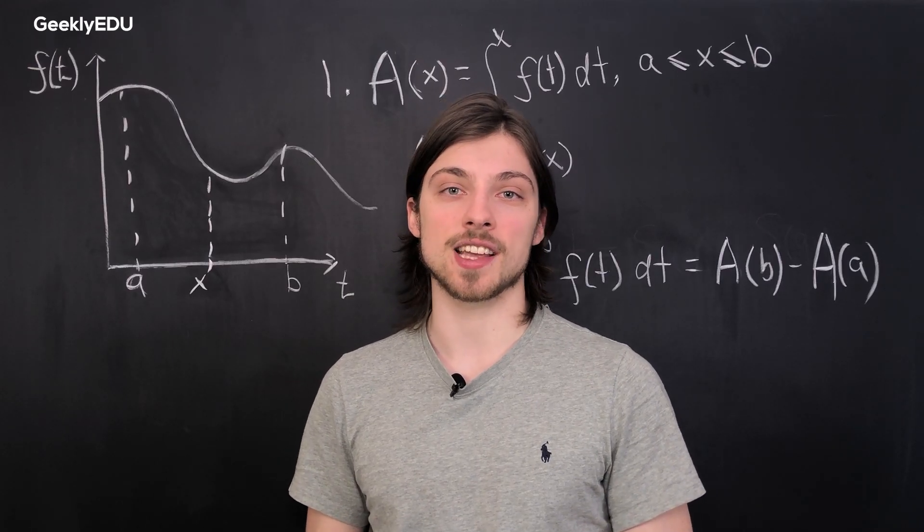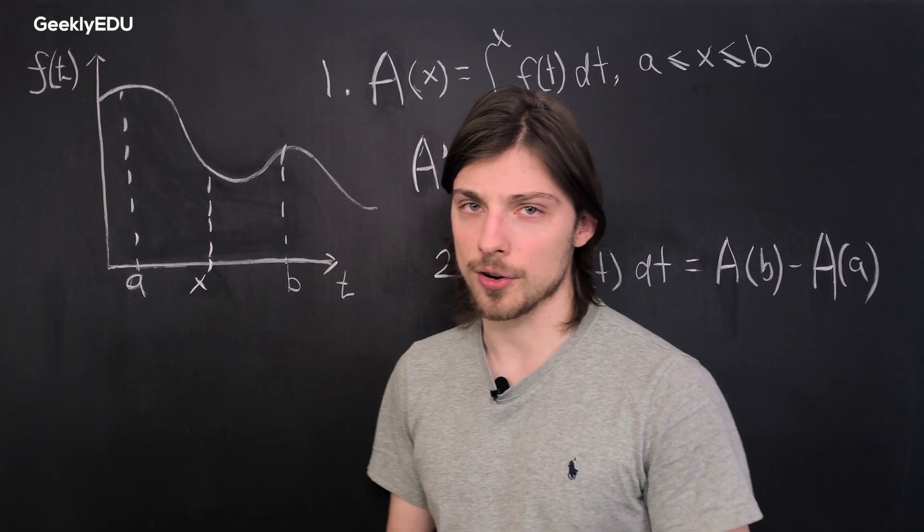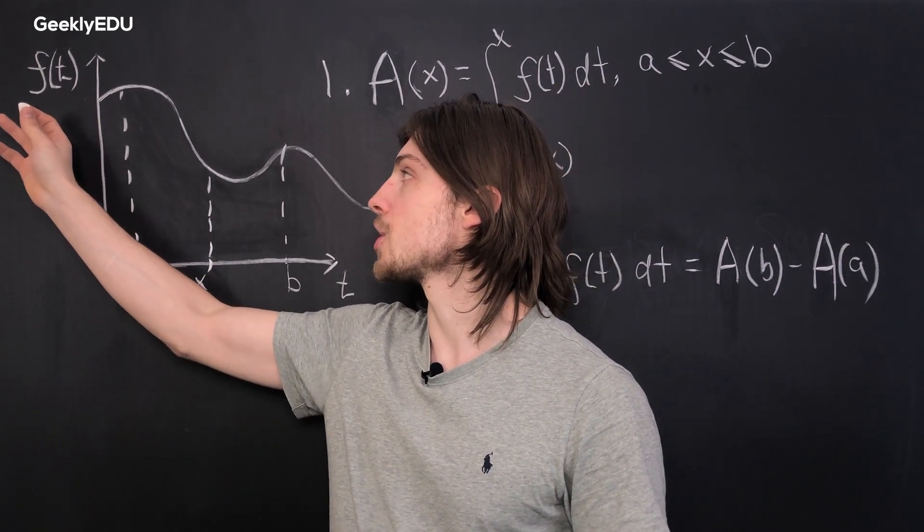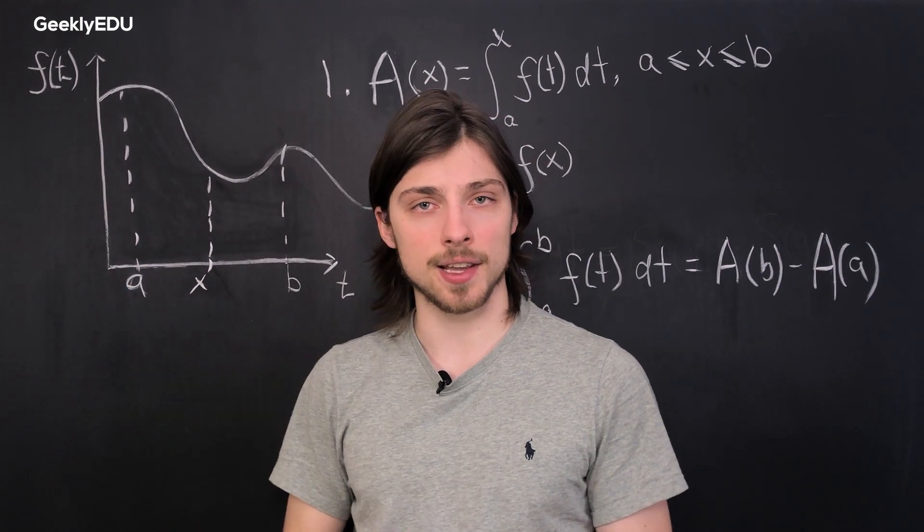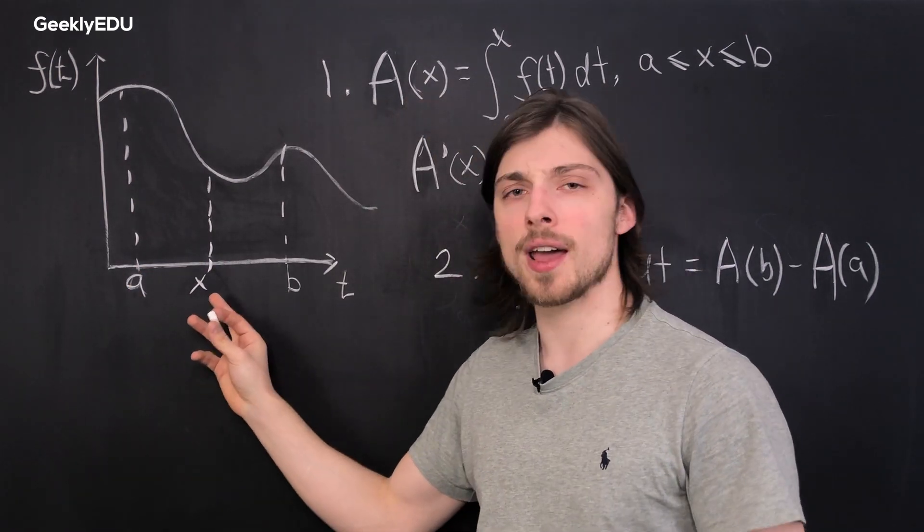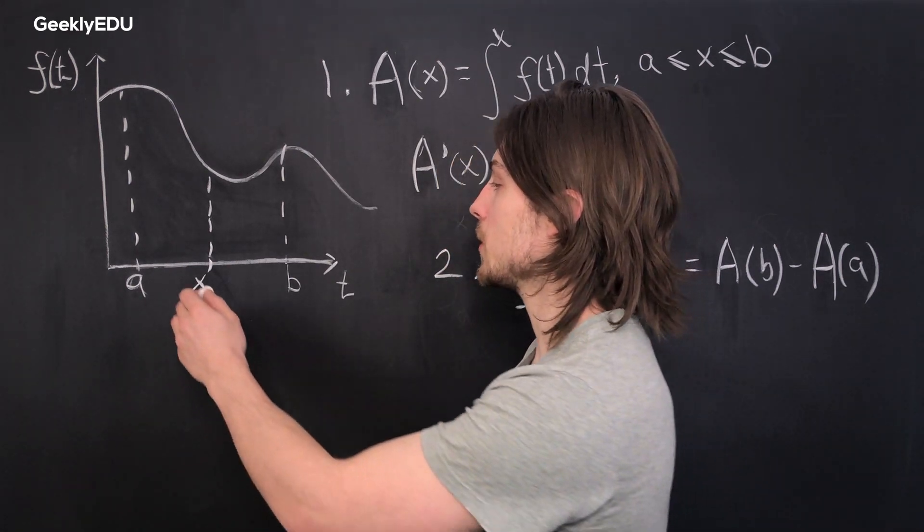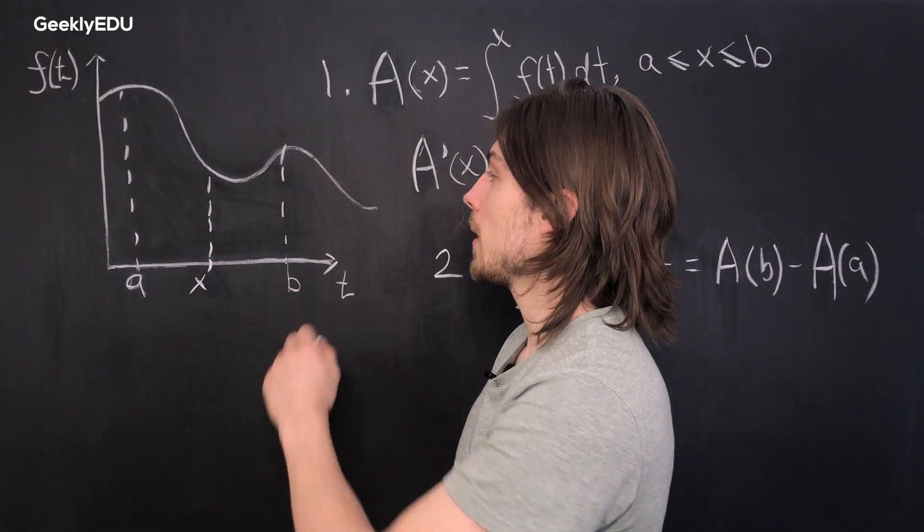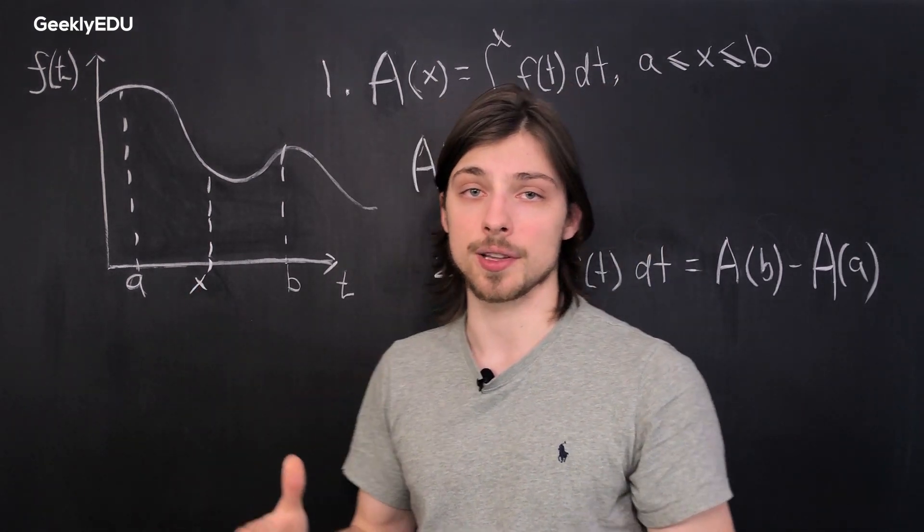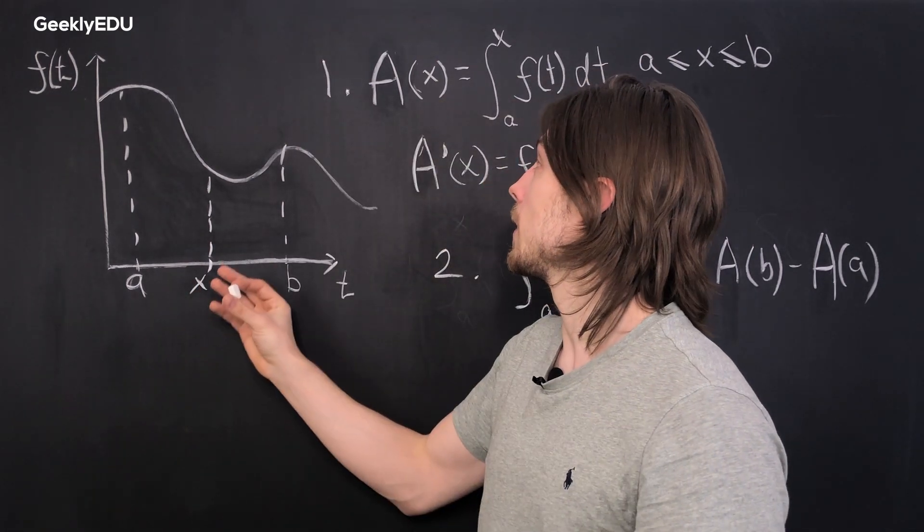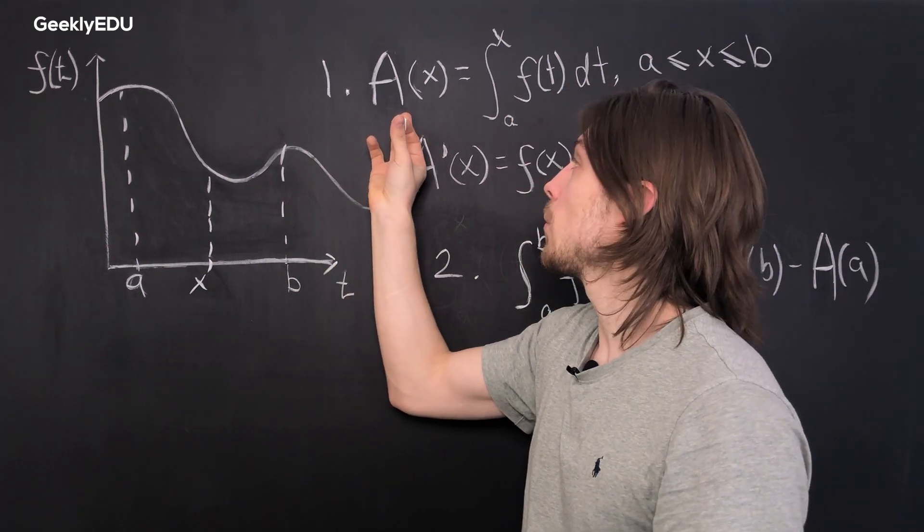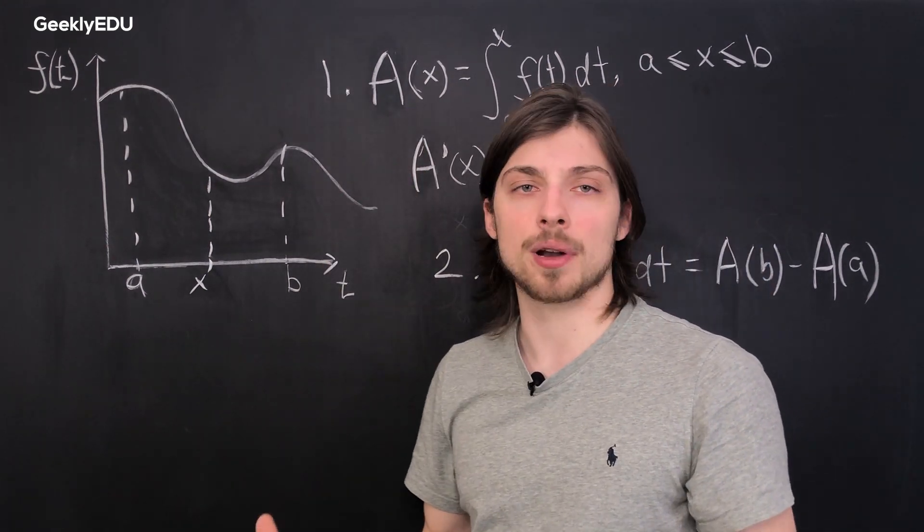Let's first examine the first fundamental theorem of calculus and for that we will need to define some function f of t that is continuous on an interval from a to b and some point x that falls between a and b. For convenience sake we're going to place it in the middle just so that you can see a little better, and now we define a new function A of x which could be a capital F of x.